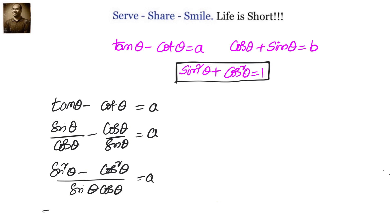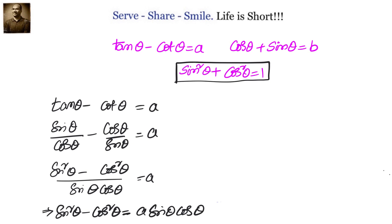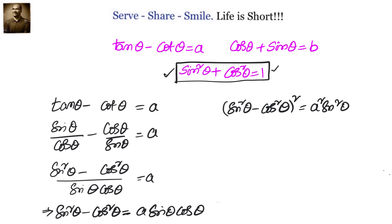Or we can write sin square theta minus cos square theta equals to A sin theta cos theta. We want to use the sin square theta plus cos square theta equals to 1 identity. So let us square this one more time and see what happens. Sin square theta minus cos square theta, whole square, equals to A square sin square theta cos square theta.